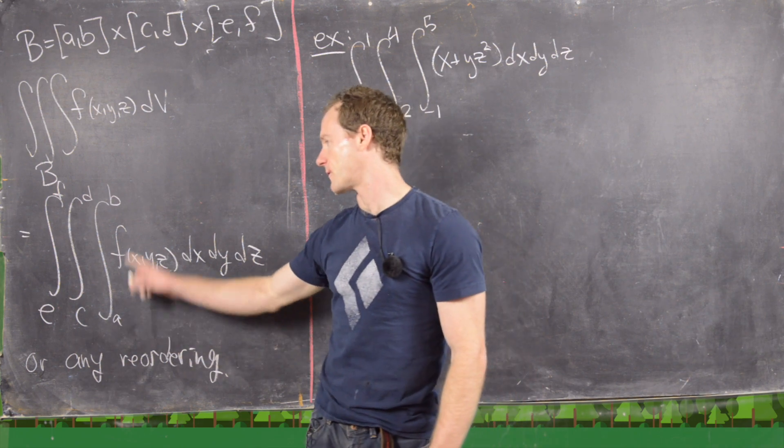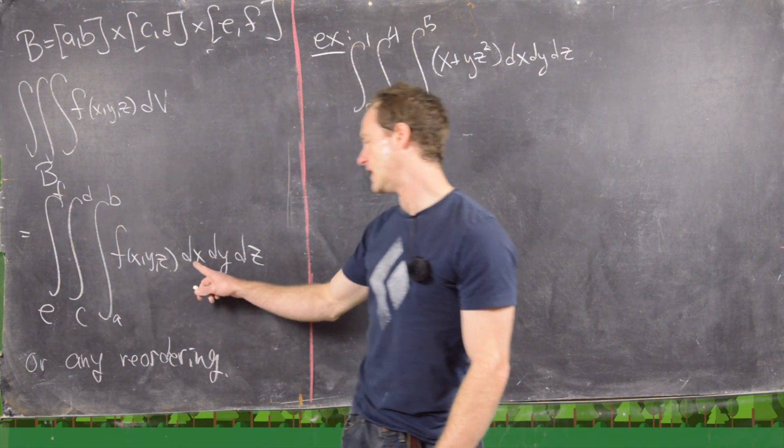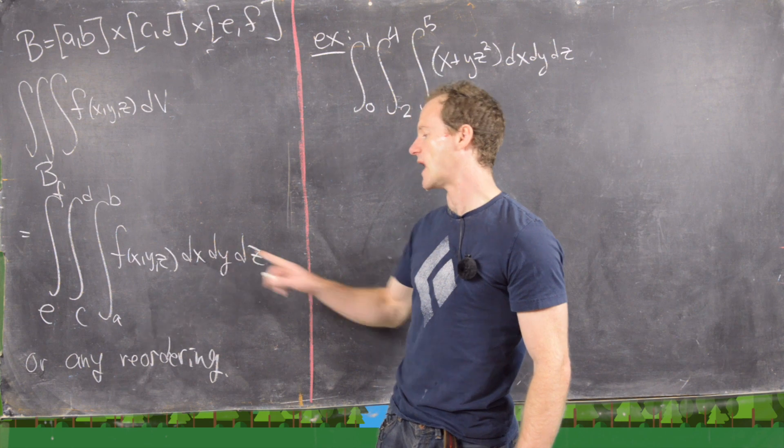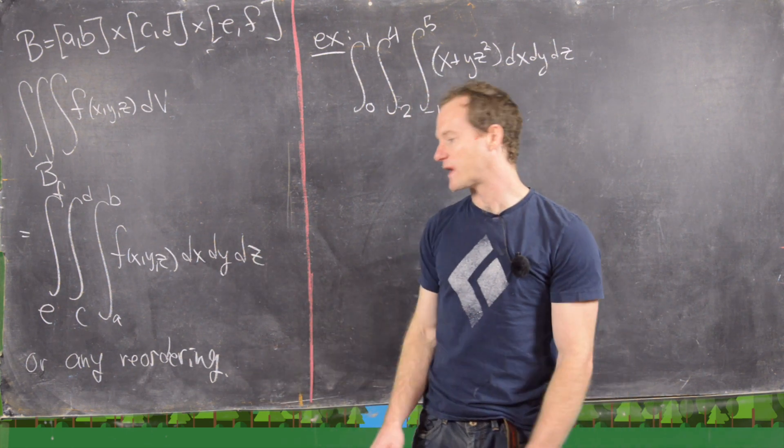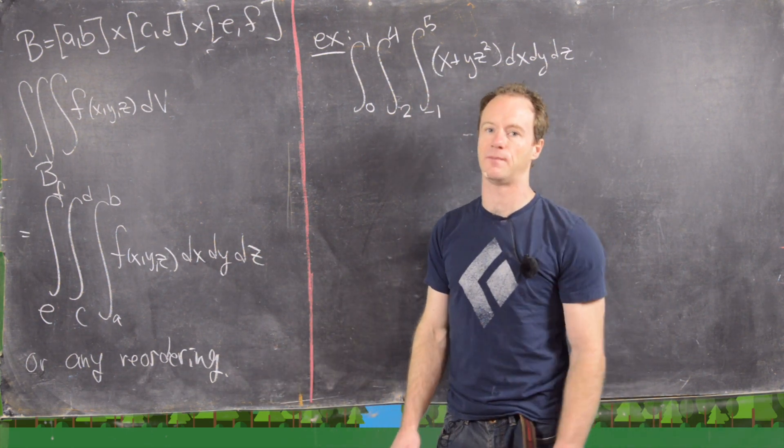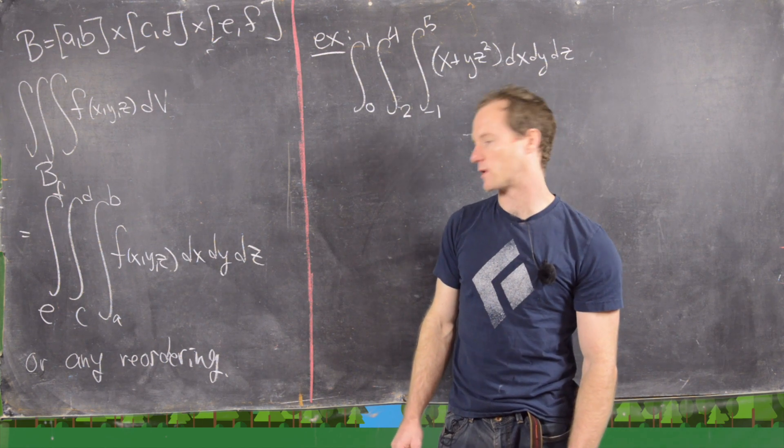So we've got an integral from A to B, C to D, E to F, and then in this order, the dx, dy, dz. And you can actually reorder this any way you want and there are going to be six different reorderings.